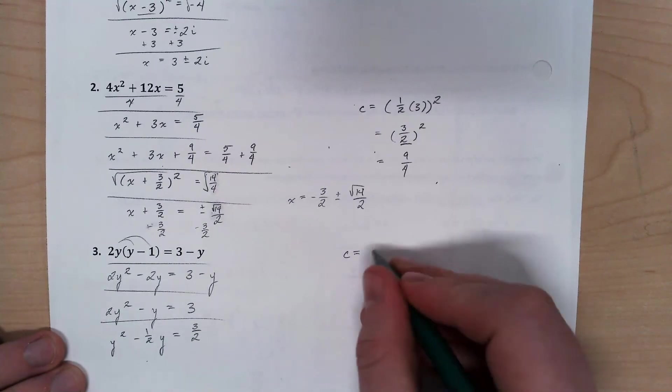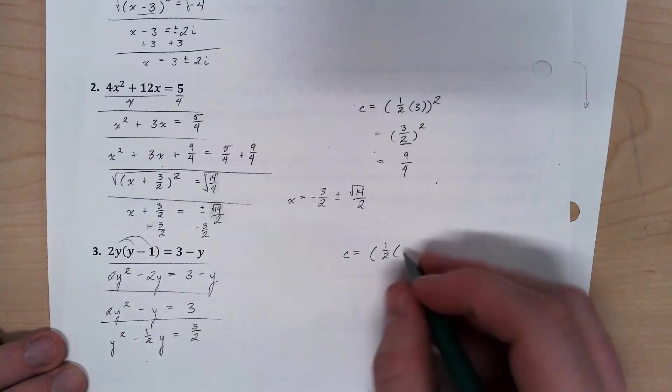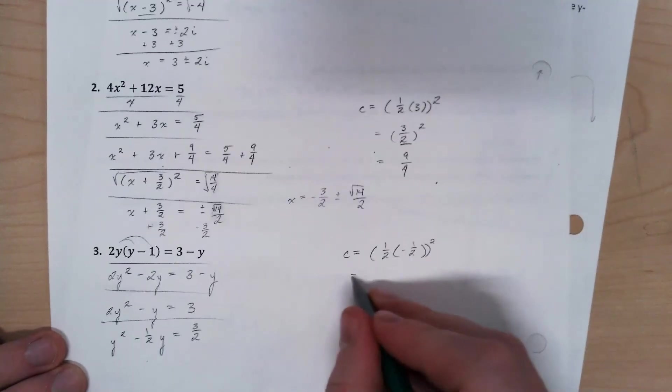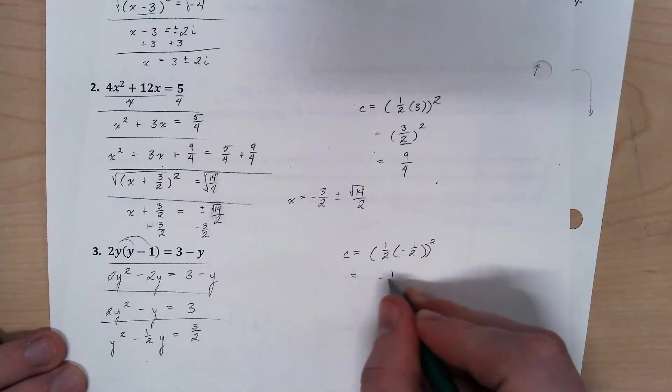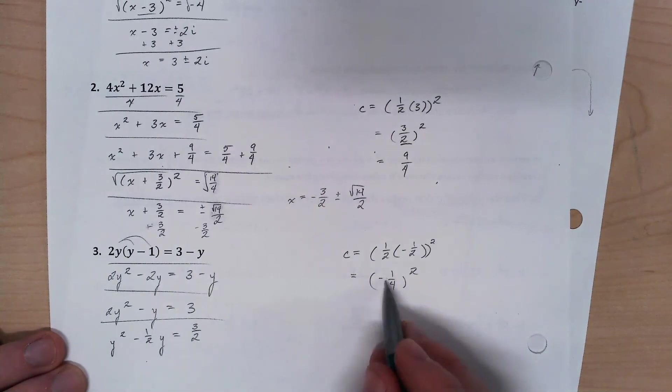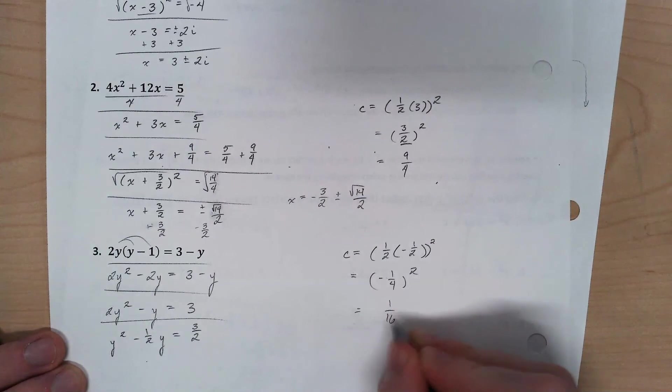So to complete the square, c needs to be one-half times negative one-half squared. Or it needs to be negative one-fourth squared. Well, negative one-fourth squared is 1 over 16.